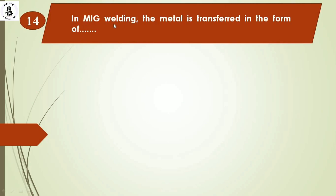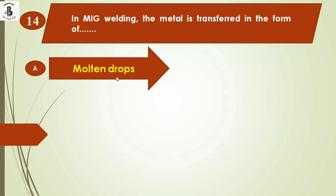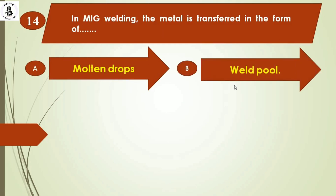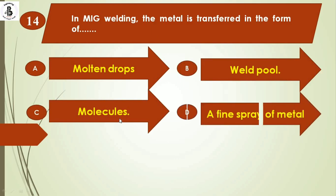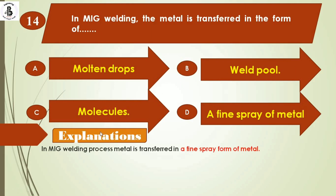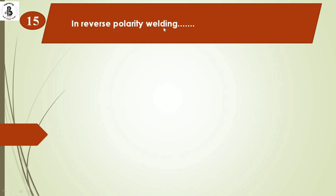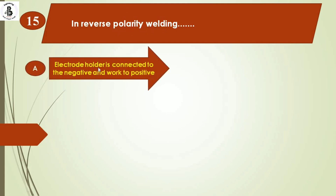Next question: in MIG welding, metal is transferred in the form of — option A: molten drops, option B: weld pool, option C: molecules, option D: a fine spray of metals. In MIG welding, the metal is transferred as a fine spray, with wire electrode continuously fed into the weld. The right answer is option D, a fine spray of metals.